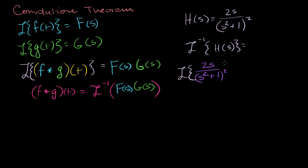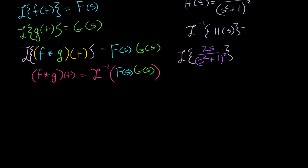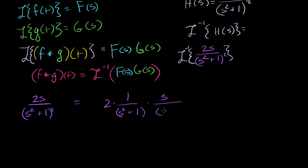Can we write this as a product of two Laplace transforms that we recognize? We can rewrite 2s over (s squared plus 1) squared as 2 times [1 over (s squared plus 1)] times [s over (s squared plus 1)]. Multiplying the numerators gives 2 times 1 times s, which is 2s, and multiplying the denominators gives (s squared plus 1) squared. So this is the same thing.